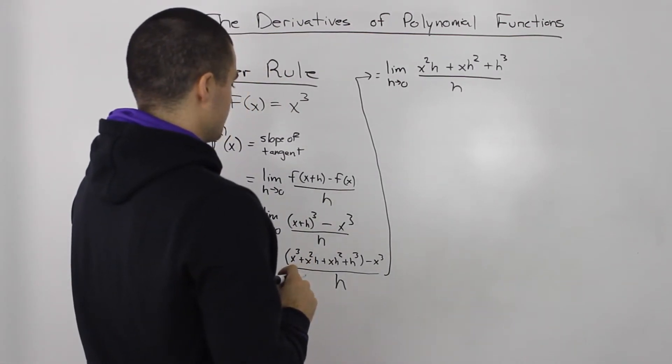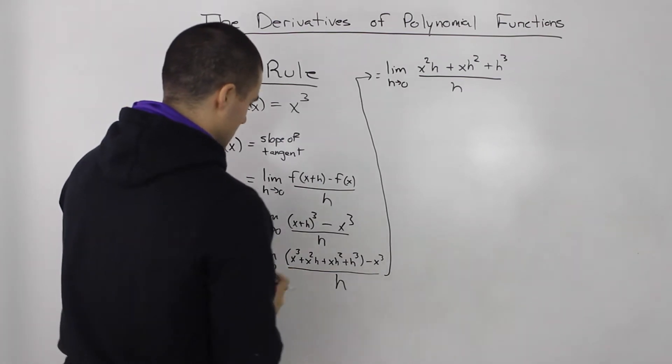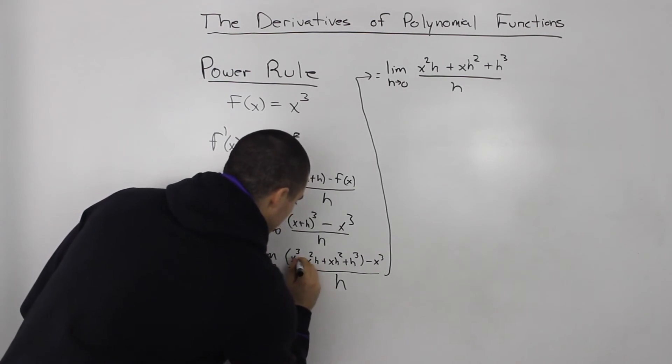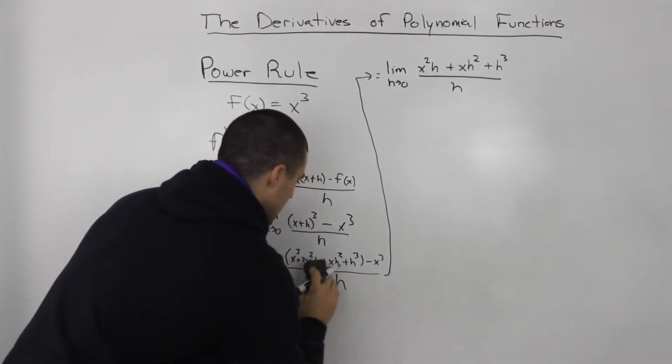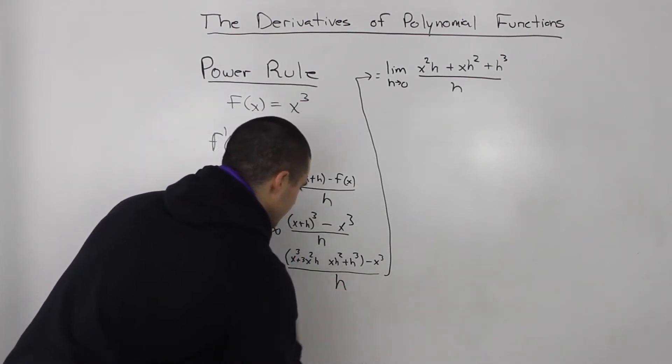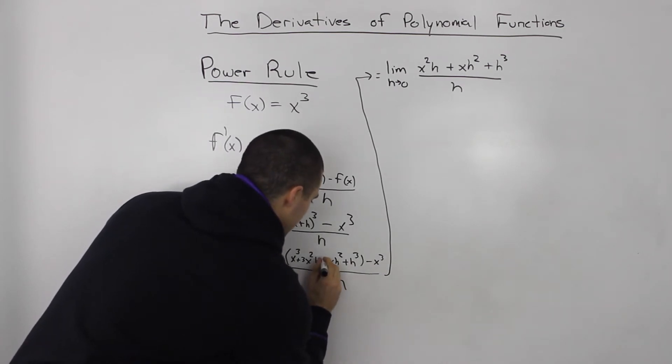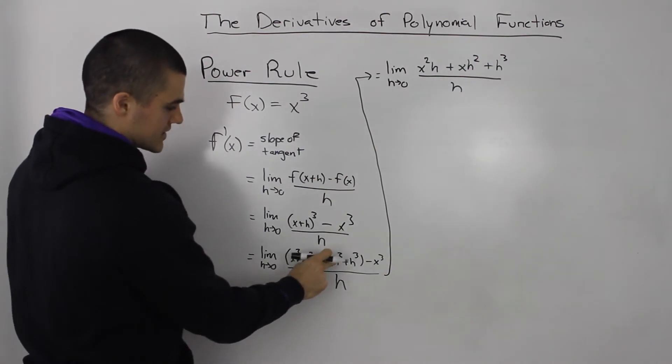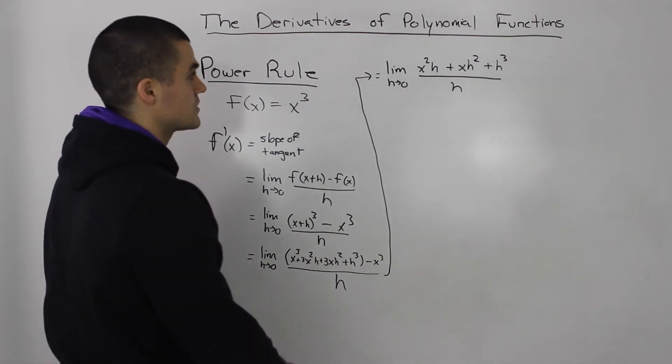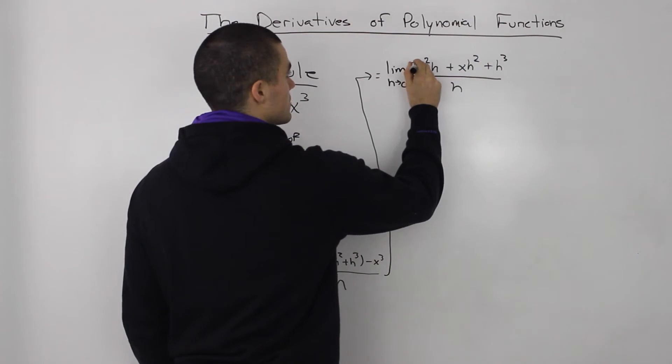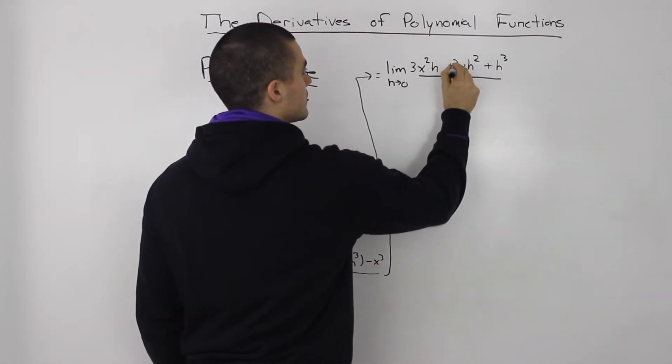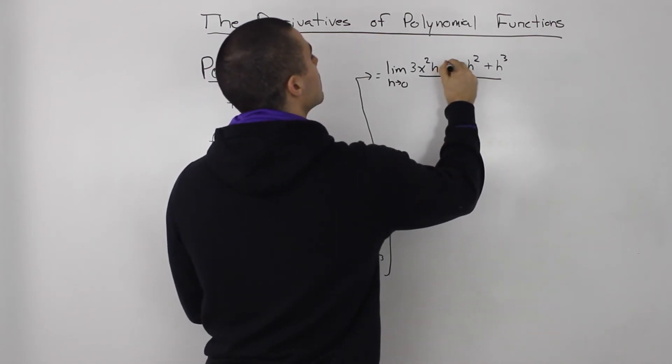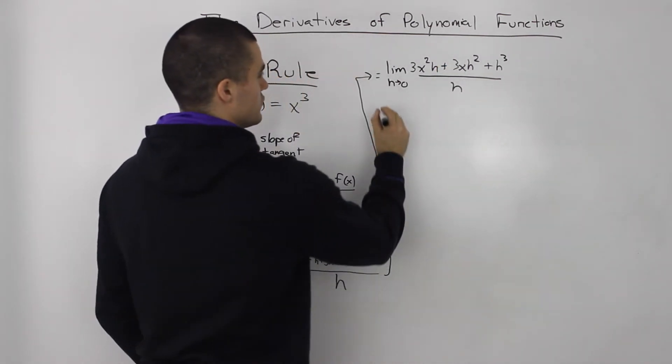Wow, I screwed this up. Sorry, there should be 3s in front here. My bad. In front of the x squared h and the xh squared, there should be 3s there. Sorry about that. So there should be 3s here as well. Okay, moving on.